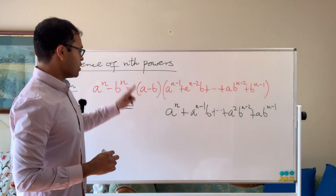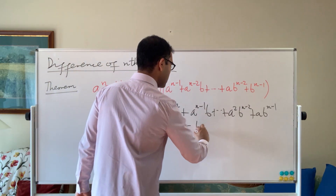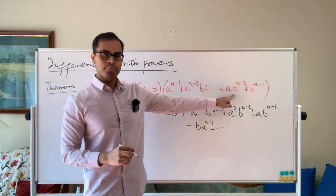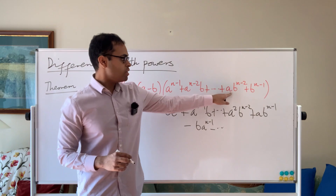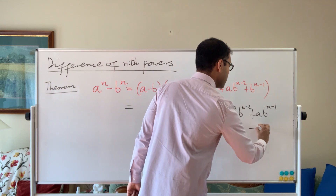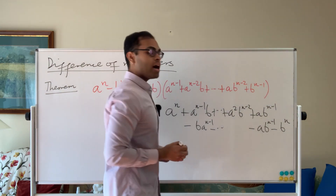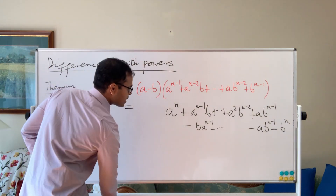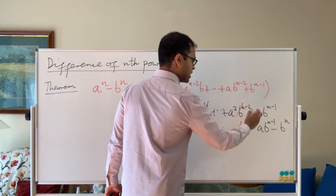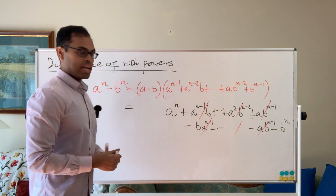That's a times the second parentheses. Now we subtract b times the second parentheses: subtract b times a to the n minus 1, dot dot dot, all the way up to b times a b to the n minus 2, giving minus a times b to the n minus 1, then subtract a times b to the n minus 1 minus b to the n. When you work out the terms, you get cancellation: a to the n minus 1 b and b a to the n minus 1 cancel, and a b to the n minus 1 minus a b to the n minus 1 cancels, leaving just a to the n minus b to the n.